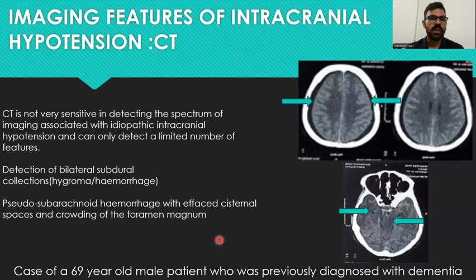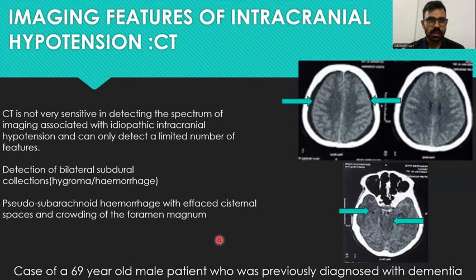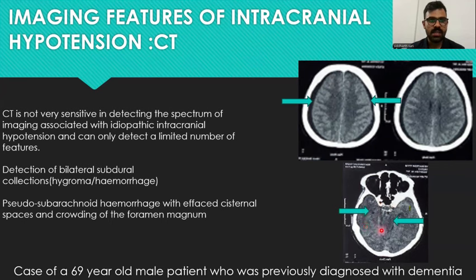Imaging features of intracranial hypotension on CT. CT is not very sensitive in detecting the spectrum of imaging associated with idiopathic intracranial hypotension and can only detect a limited number of features. These include bilateral subdural collections — hygromas or hemorrhages — pseudosubarachnoid hemorrhage with effaced cisternal spaces and crowding of the foramen magnum. This is demonstrated in a case of a 69-year-old male patient diagnosed with dementia.